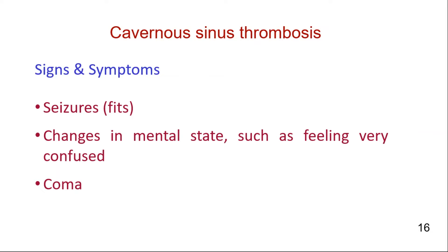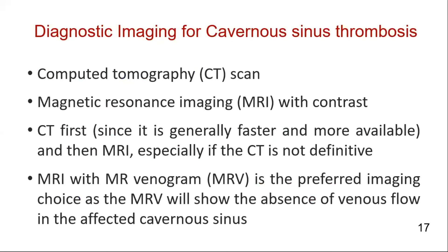These signs and symptoms, when present, differentiate cavernous sinus thrombosis from other orbital infections. In current practice, CT scan or MRI with contrast is the modality of choice to confirm the diagnosis and to differentiate it from alternatives such as orbital cellulitis, which may have a similar clinical presentation. The literature suggests using both CT and MRI — CT first, then MRI, especially if the CT is not definitive. MRI with MR venogram is the preferred imaging choice, as the MR venogram will show the absence of venous flow in the affected cavernous sinus.